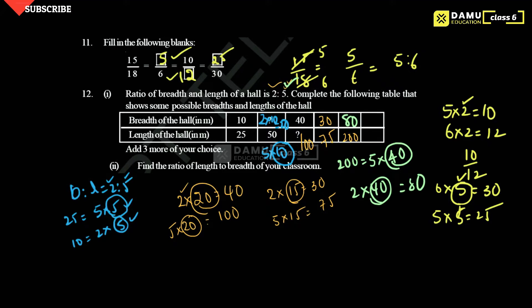Then another one — let's take here 40. So 40 means 5 into something if you do means 40, you will get 5 eights — so 8 is constant. Then multiply here 2 with 8, same constant, you will get 16 here. Like that you can solve this type of questions.